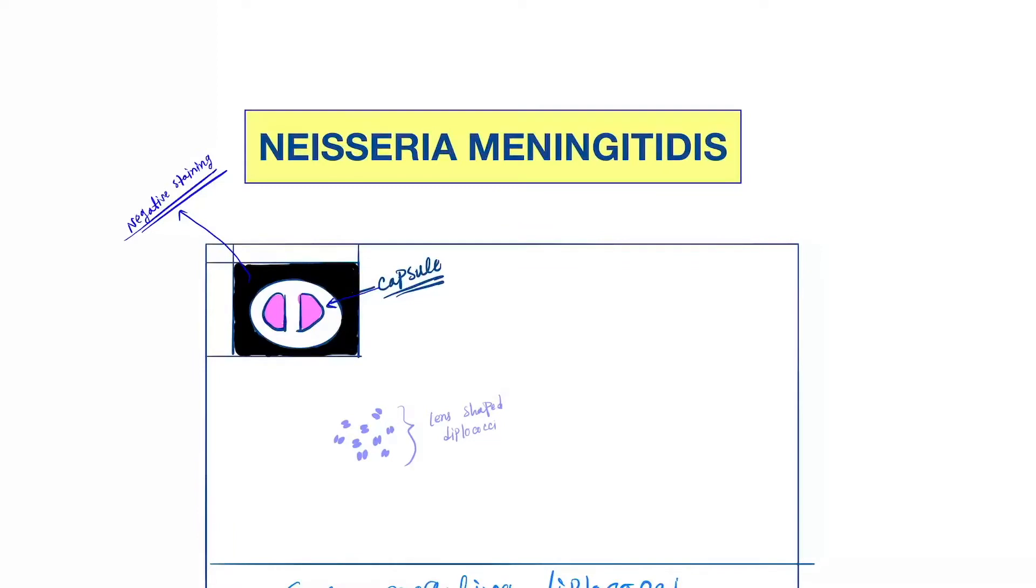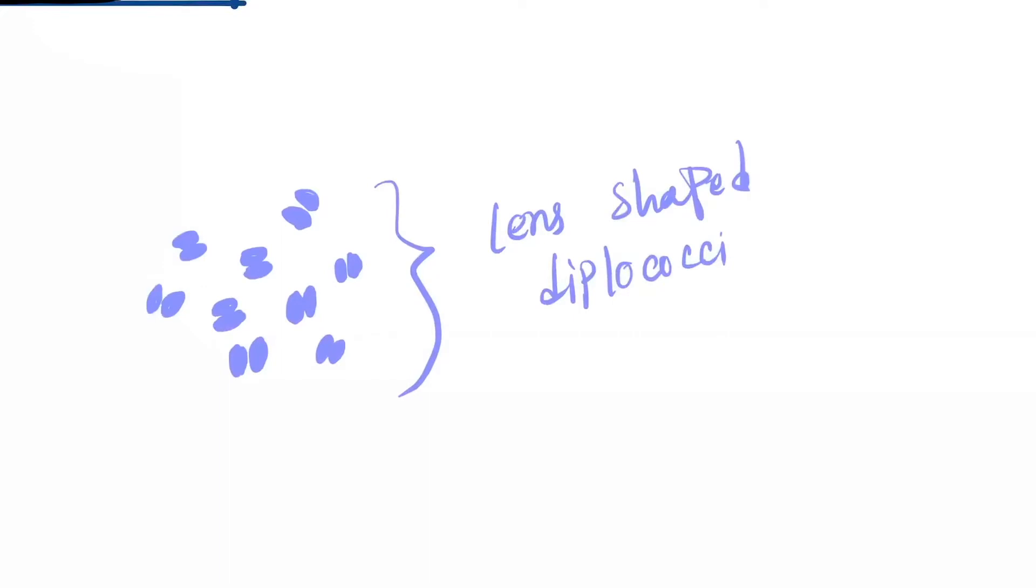Hello friends, today our topic is Neisseria meningitidis. They are gram-negative cocci, not only gram-negative but also diplo cocci. Here you can see lens-shaped diplo cocci.